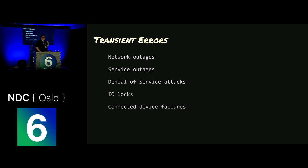We're talking about transient errors. These are things that happen outside of your control, whether they're network outages or service outages, or a service goes down for some reason — maybe it's in the code, maybe it's in the infrastructure. Denial of service attacks can happen. These are just things that happen. And how do you gracefully recover from these? That's what Polly helps with.